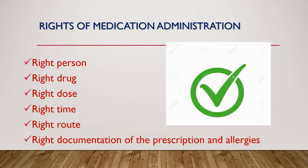For the right drug, check the labeled drug against the prescription and ensure the medication hasn't expired. For the right dose, check the drug dose against the prescription. For the right time, confirm the appropriate time to administer the medication and check when the patient received a previous dose if relevant. For the right documentation, document allergies and ensure the prescription is valid, and check the patient isn't allergic to the medication you are going to administer.